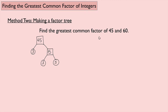Now let's look at 60. Put 60 in a box. 2 works, so put 2 in a circle since it can't be broken down, and then I have 30 in a box. 30 can also be divided by 2: 2 times 15 is 30. And 15 can be broken down: 15 is 3 times 5.